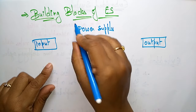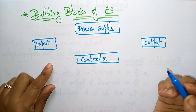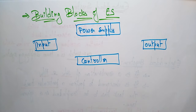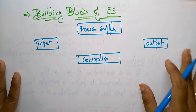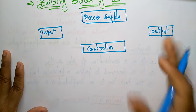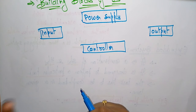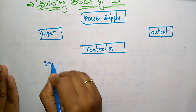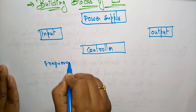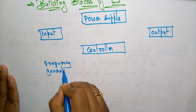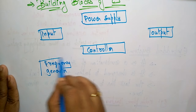So you need input, output, controller, and power supply. But you also require a frequency generator — a crystal oscillator — because the work has to be completed in a particular time. For that we use the crystal oscillator.